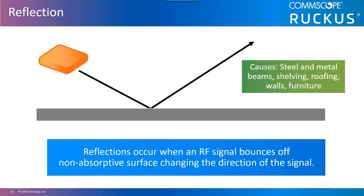In an indoor environment, microwaves reflect off smooth surfaces such as doors, walls, filing cabinets, and anything of sufficient size that they strike. Anything made of metal will cause reflection. Other materials such as glass and concrete may also cause reflection depending upon the characteristics of their structure.